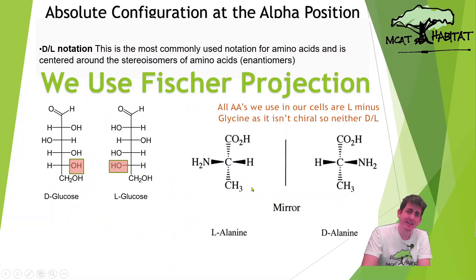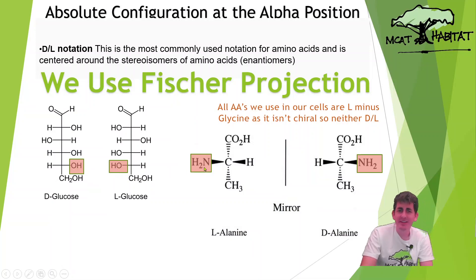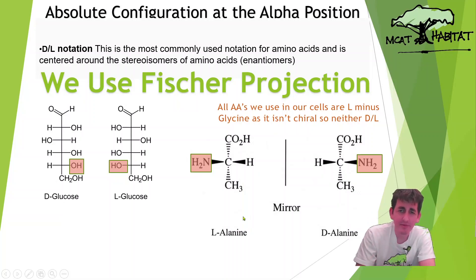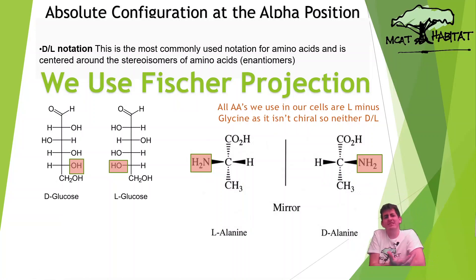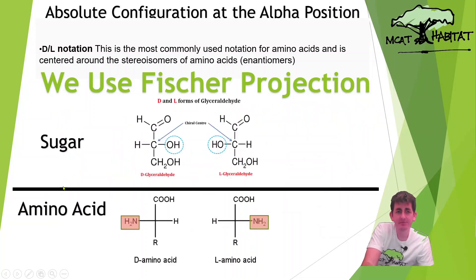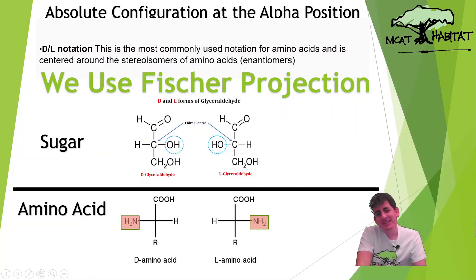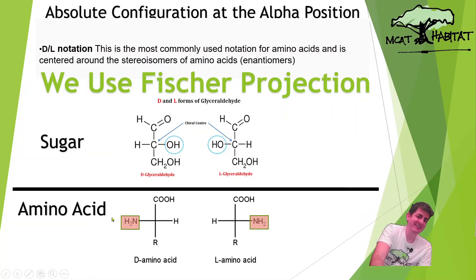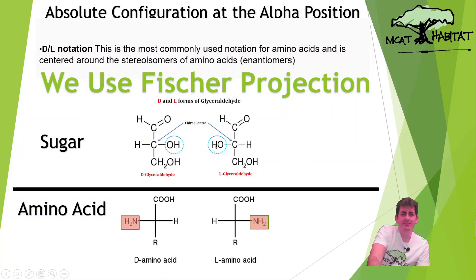All amino acids will be L, minus glycine which isn't chiral and is neither D nor L. So we'll find L-alanine in our cells. For sugars — there's actually an error on the slide. If you can find it, comment it down below. This D-glyceraldehyde has the OH on the right, and L-glyceraldehyde has the OH on the left of the second carbon. But on the bottom of the slide, these labels got mixed up.